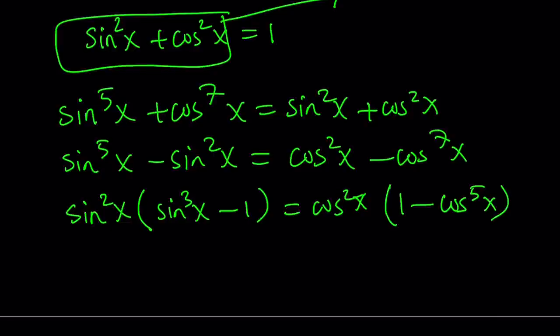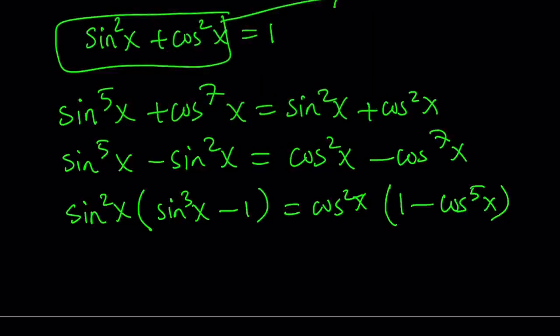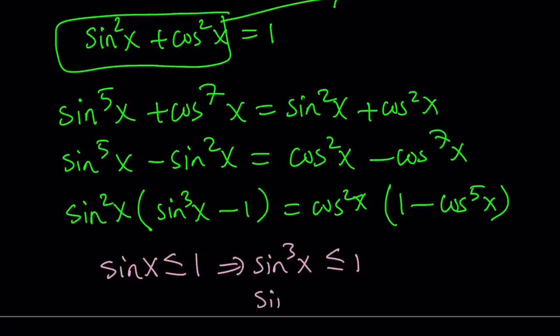Now how does this help? This is the million-dollar question. Here's how we can use this. We know that sine and cosine are bounded from above and from below. They always take values between negative one and one inclusive. So, sine x is less than or equal to one. That's the maximum value it can take. Cube both sides, nothing changes.